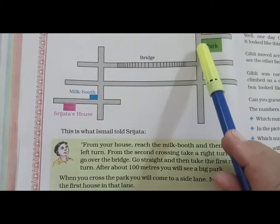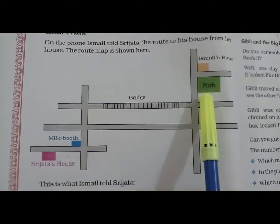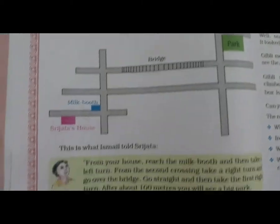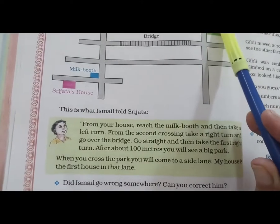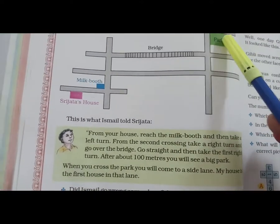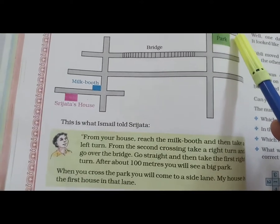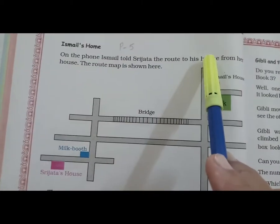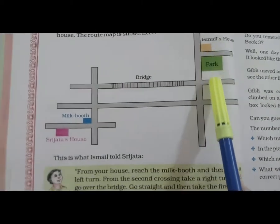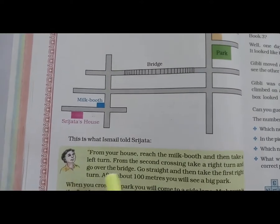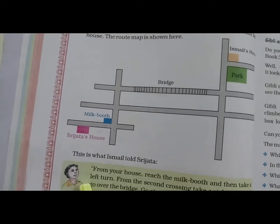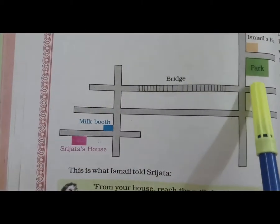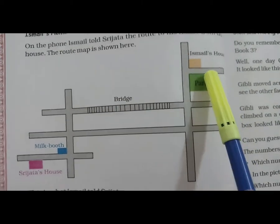You will see a park. When you cross the park, you will come to a side lane. My house is the first house in the lane. यह इस्माइल का घर है, यहाँ पूरी colony होगी लेकिन हमें इस्माइल का घर ही देखना है। इस्माइल यह रूट सुजाता को बता रहा है — इस रूट से इस्माइल के घर पर पहुँच जाते हैं, कहाँ मोडना है, कहाँ जाना है।